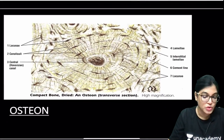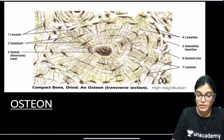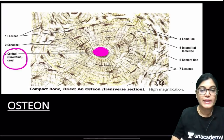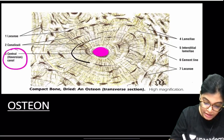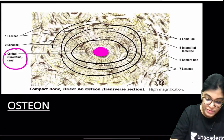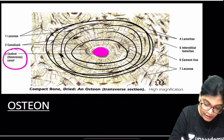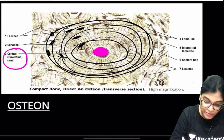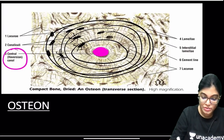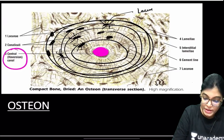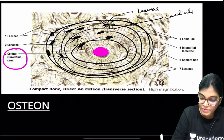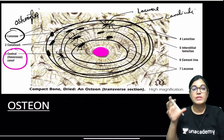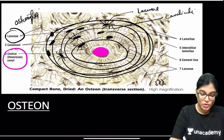In the high-power view of an osteon, you can appreciate the Haversian canal through which blood vessels, nerves, and lymphatics enter. There are 9–14 concentric laminas. The lacunae are clearly visible, with canaliculi extending from them and osteocytes residing inside the lacunae.